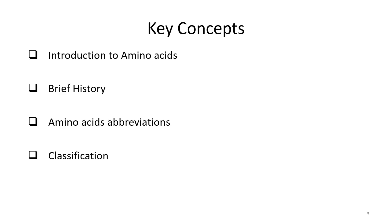Then we shall see the different kinds of amino acids and how we can use three-letter abbreviation or one-letter abbreviation for these compounds. Then we shall have a detailed study of the classification of amino acids — they can be classified in various ways. And the last part of this lecture is about non-standard amino acids.